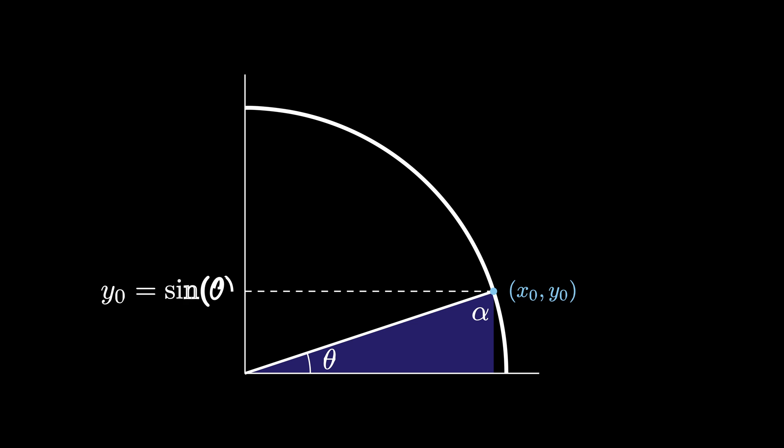Recall that by definition, the coordinate y0 is the sine of the angle theta. Also, notice that when we draw that horizontal line, since theta and alpha are complementary, this angle here is theta as well.